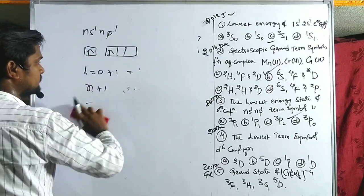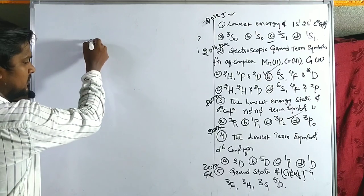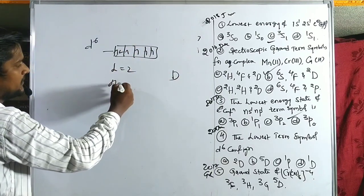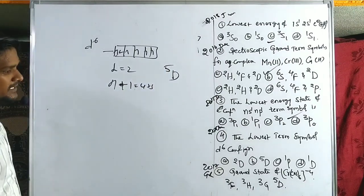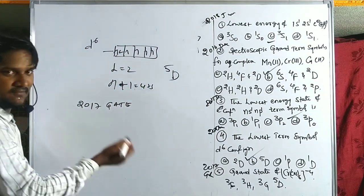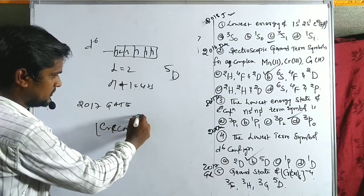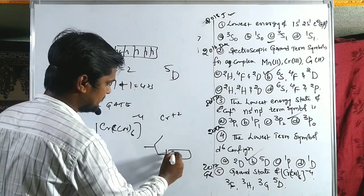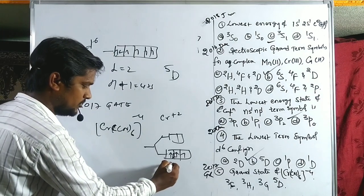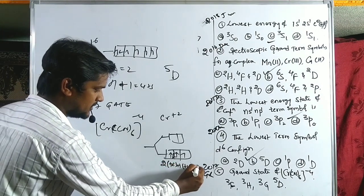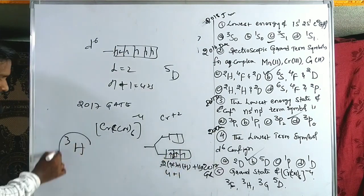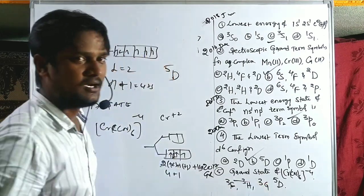Problem 4: lowest term symbol of D6 configuration. Electrons at +2,+1,0,−1,−2 and one extra at +2. L = 2, term D. Four unpaired electrons, multiplicity = 4+1 = 5, giving 5D. Option B is correct. Problem 5 (GATE 2017): [Cr(CN)6]4−, Cr2+, D4 configuration, strong field — fourth electron pairs in t2g. L = 5, term H. Two unpaired electrons, multiplicity = 3. Ground term is 3H. Option B is correct.